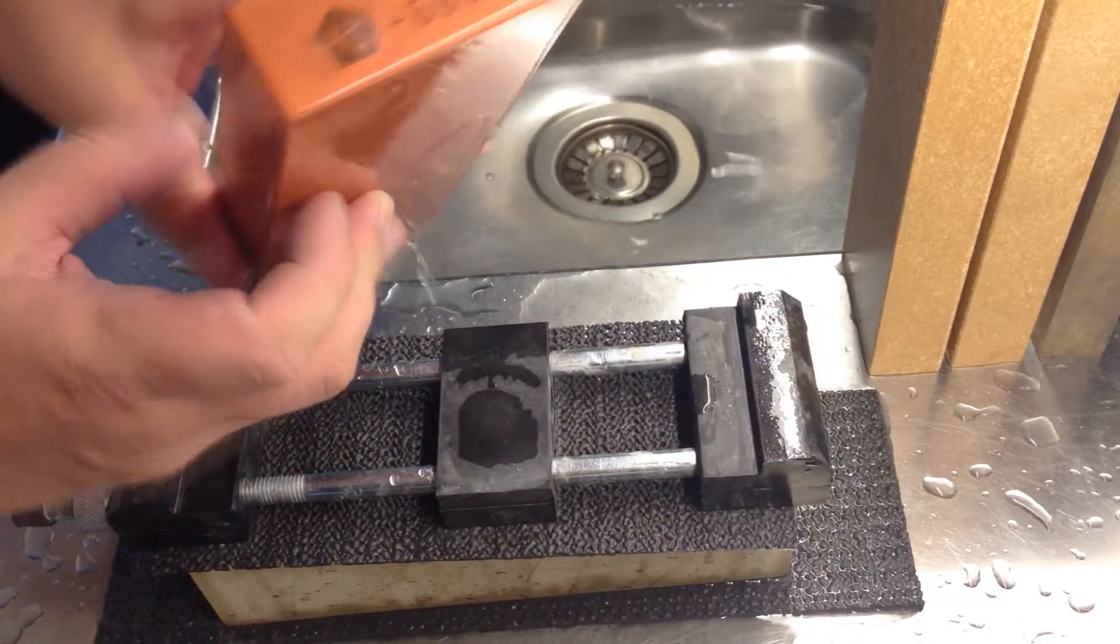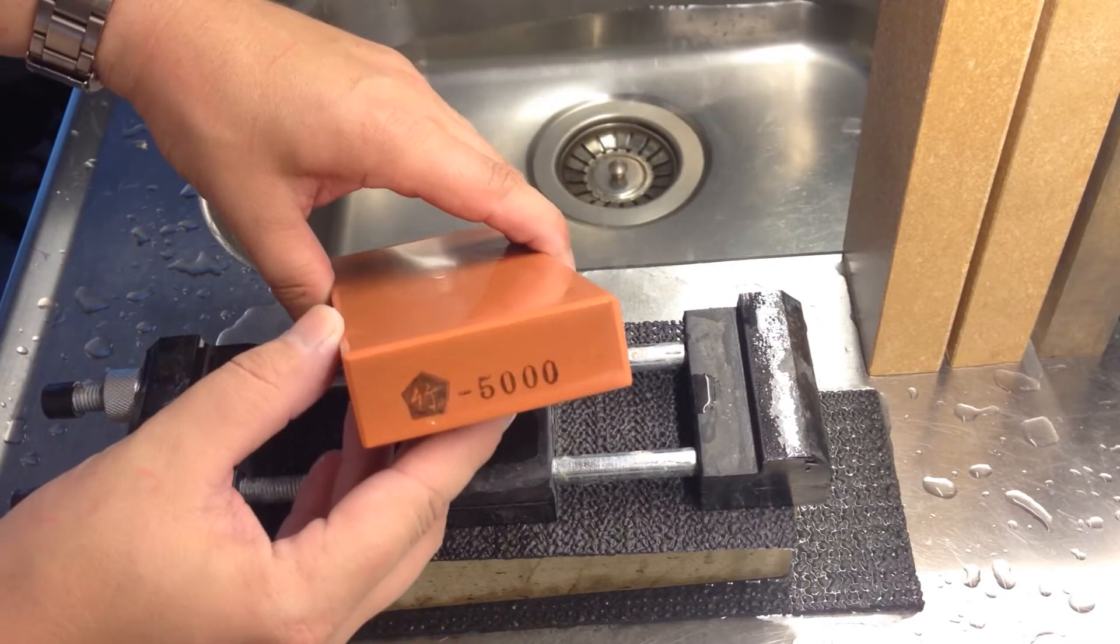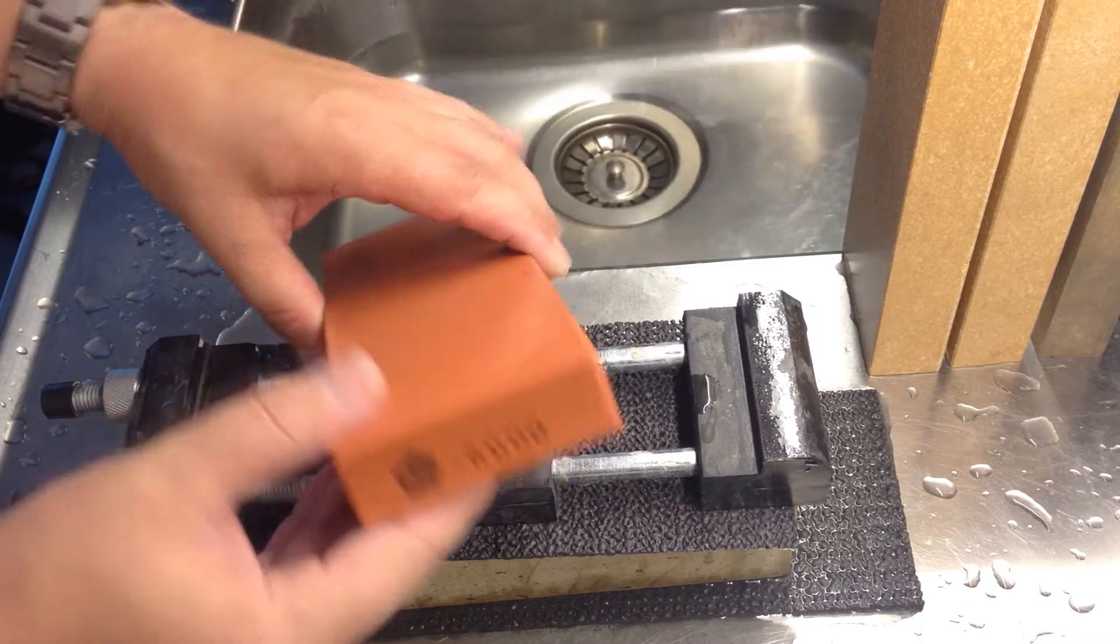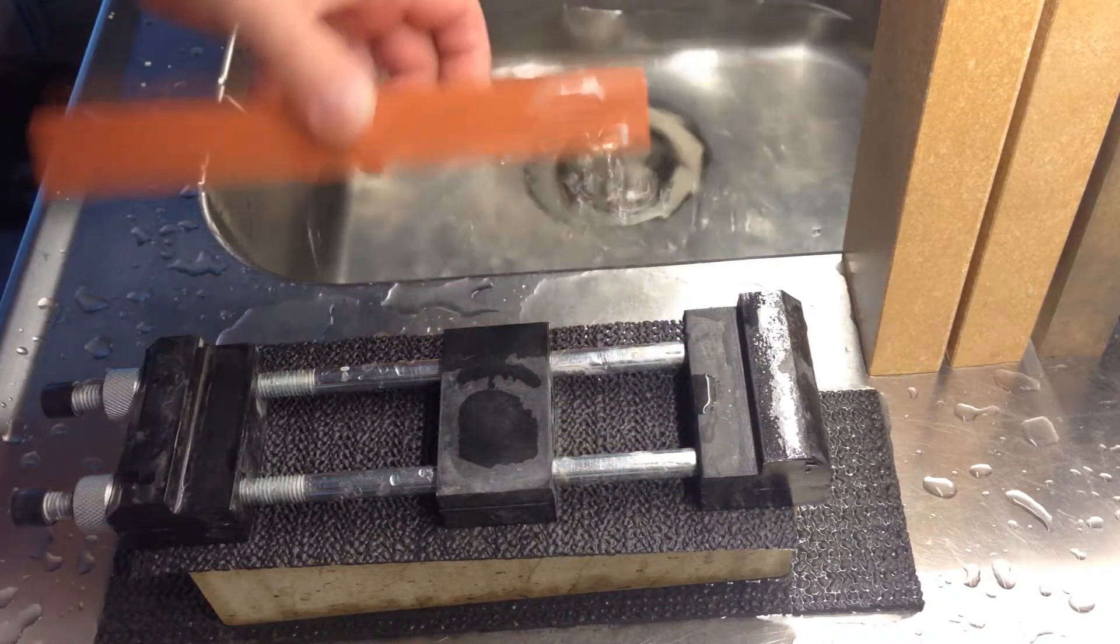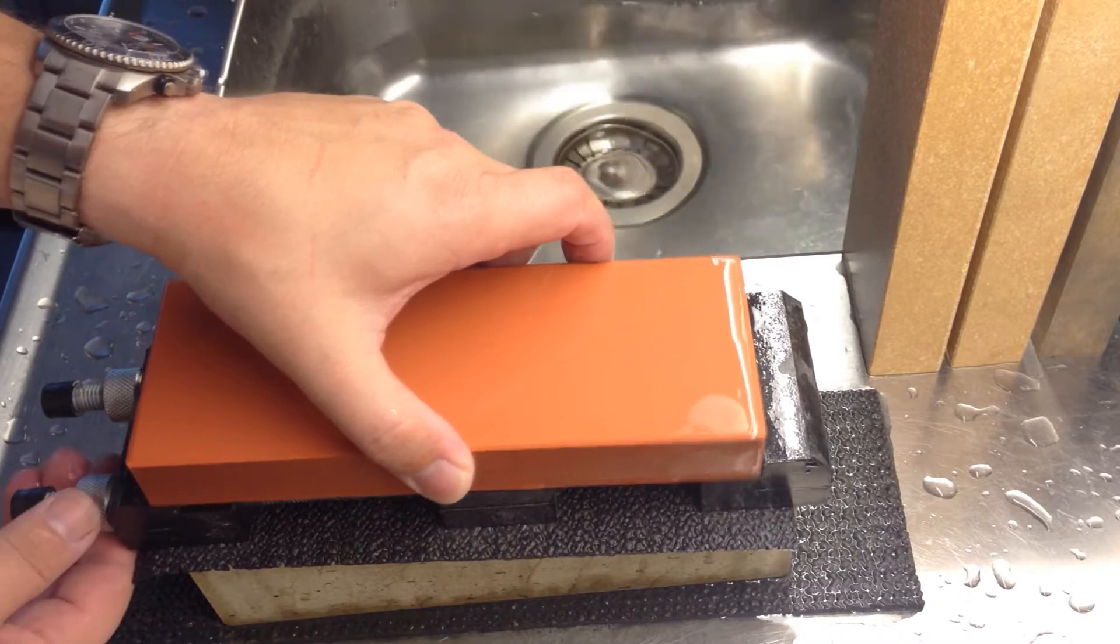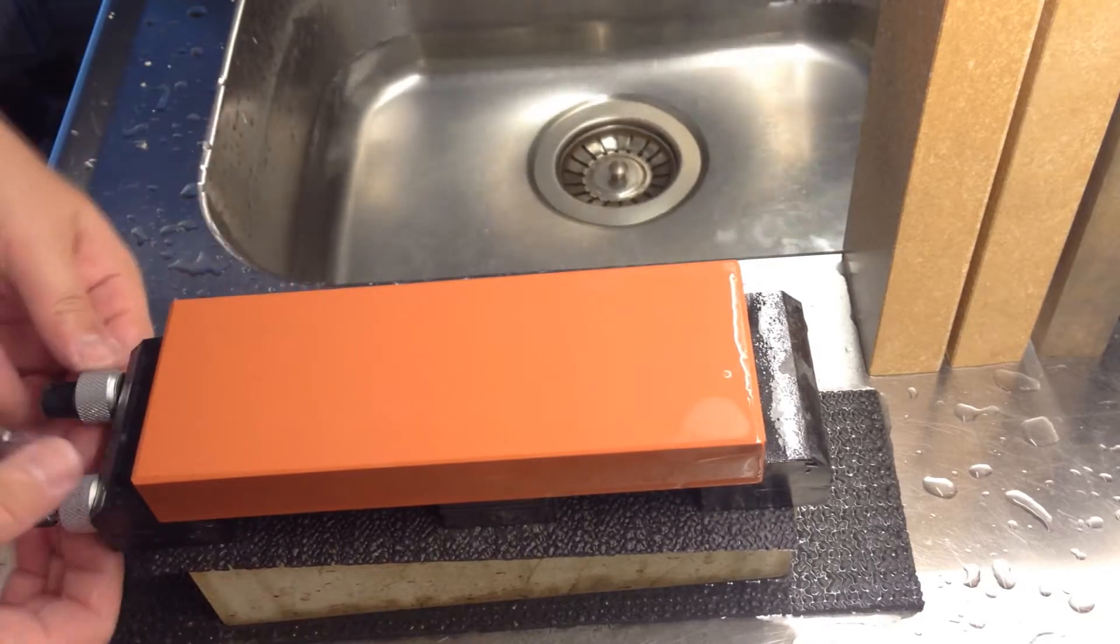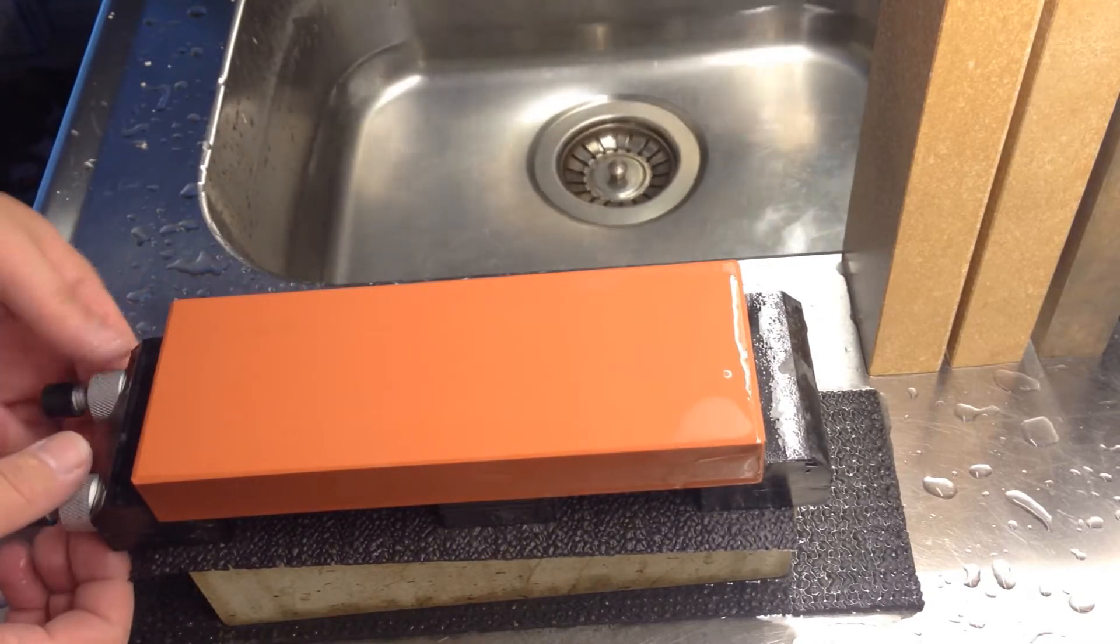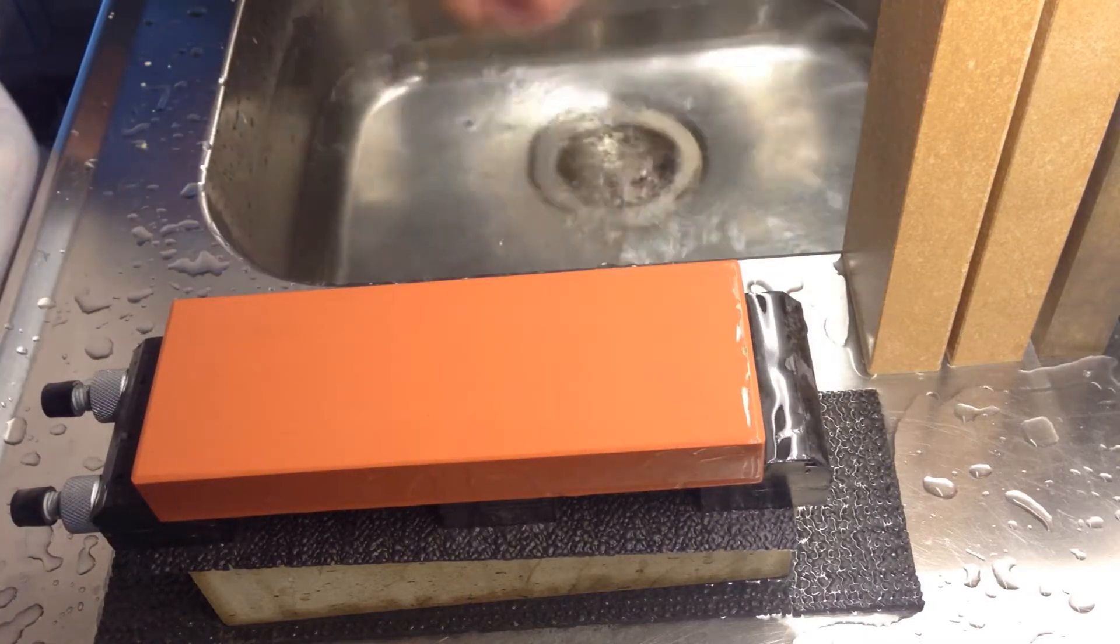But this stone is the Nubatama Bamboo 5K stone. The orange small brick here, it looks like a brick almost. As I said, it's a 5K stone that will suit many as a finishing stone for kitchen knives.